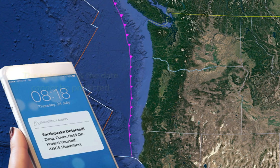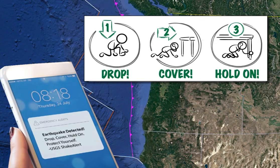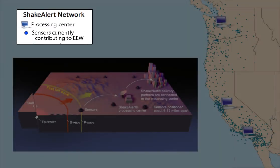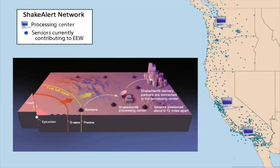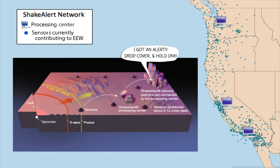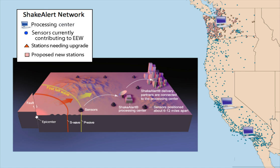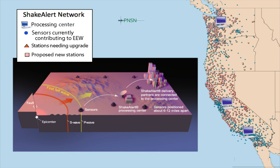If you feel shaking or get an alert, drop, cover, and hold on. Today, ShakeAlert can effectively detect earthquakes throughout the three-state system and deliver alerts via its distribution partners before people experience strong shaking. The ShakeAlert system continues to improve, potentially leading to longer warning times.